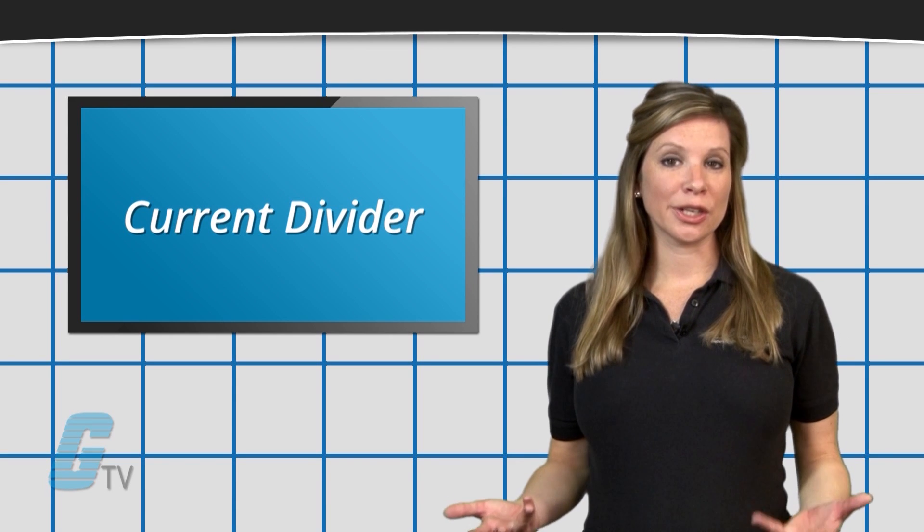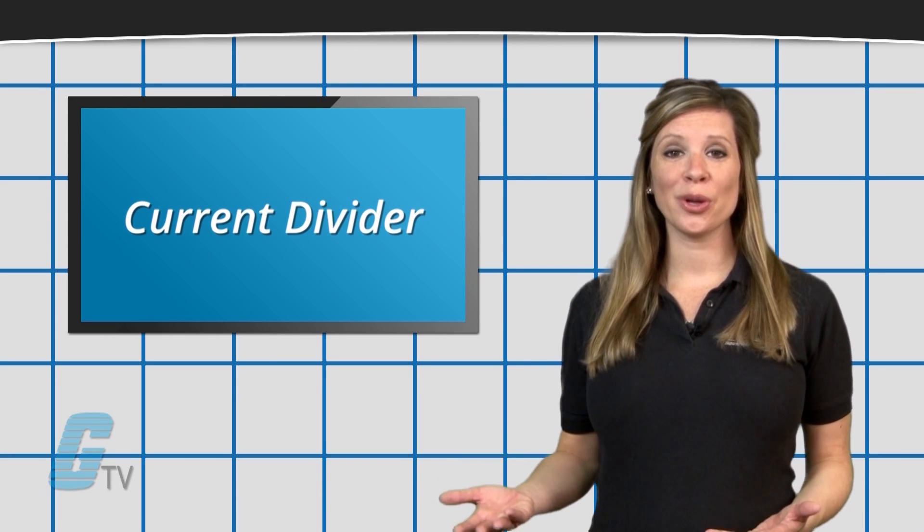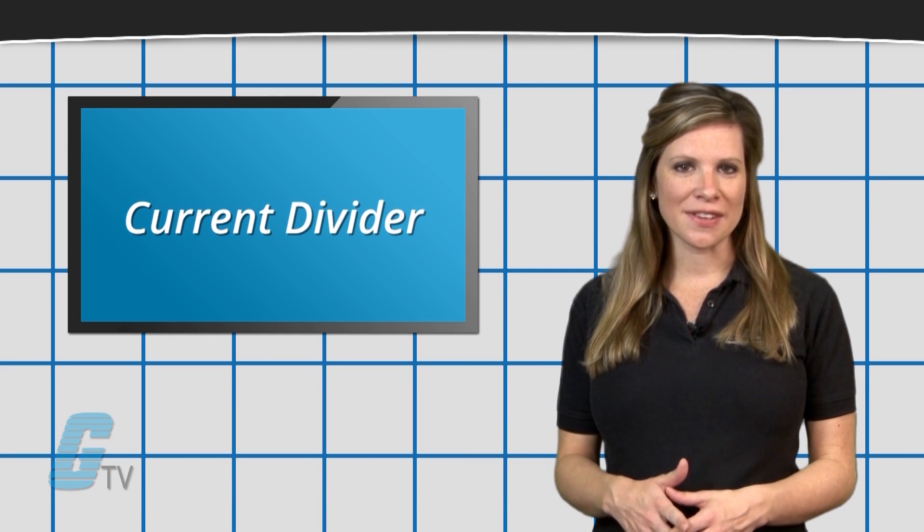A current divider is a simple linear circuit that produces an output current that is a fraction of its input current.